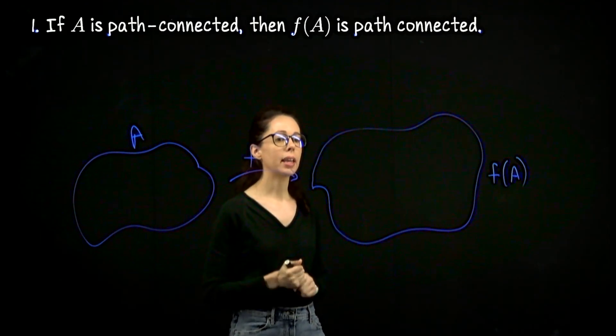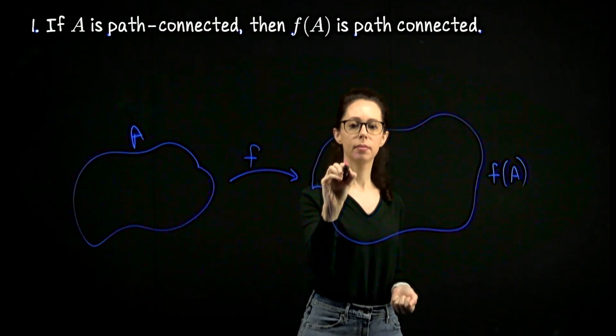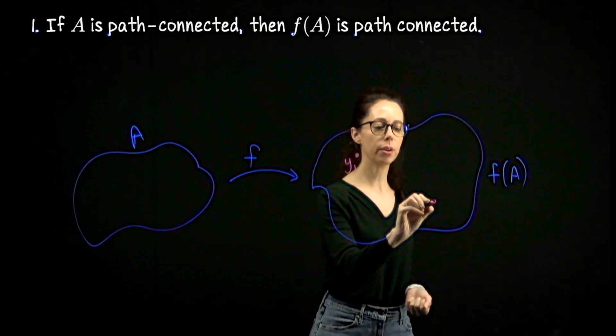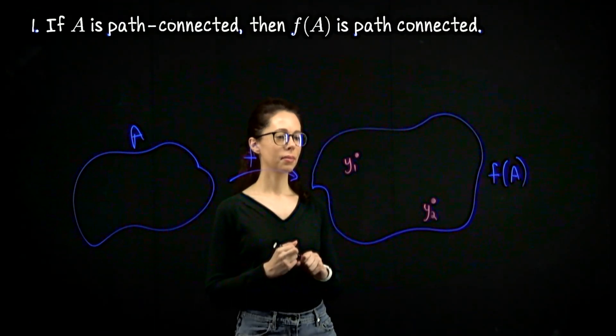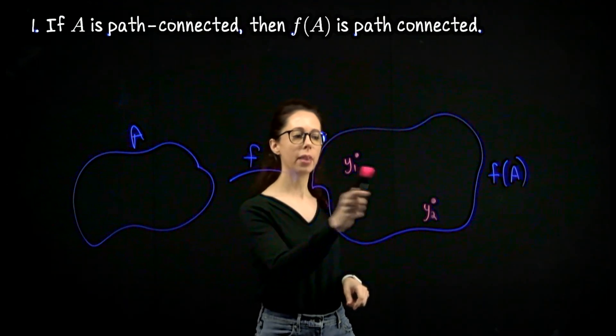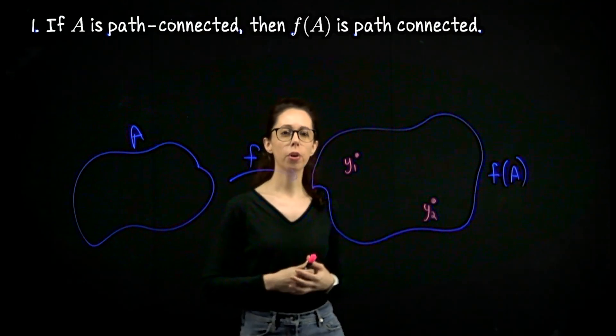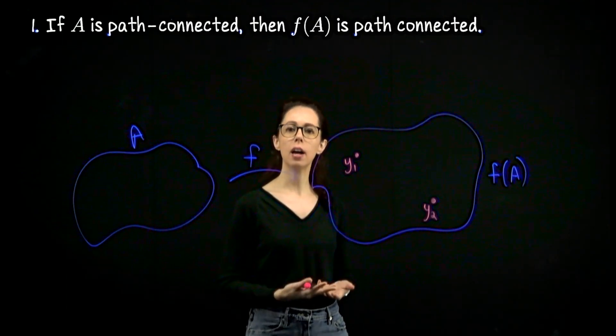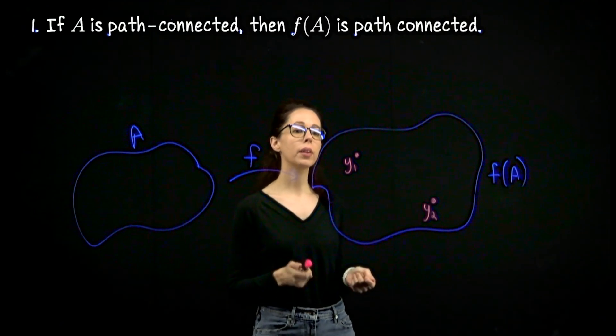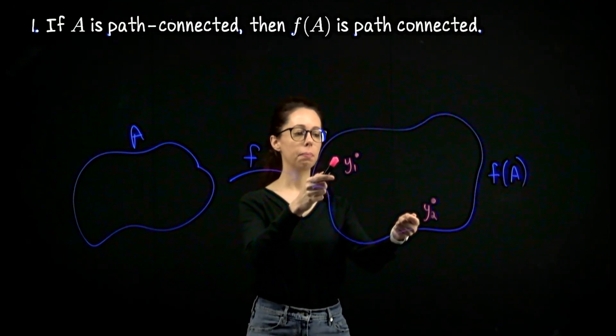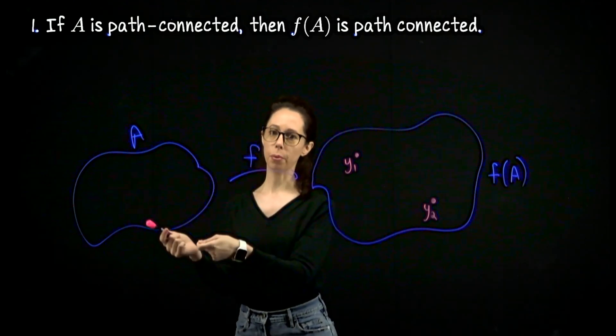A moment ago I asked you to revisit that definition if you don't have it committed to memory yet. What we want to do is claim that for any pair of points in f of A, say y1 and y2, there exists a continuous path between them. This is where we must start our proof because it mirrors the first clause in the definition of being a path connected set. What we are going to do is basically bring these outputs back to the domain by looking at their pre-images.